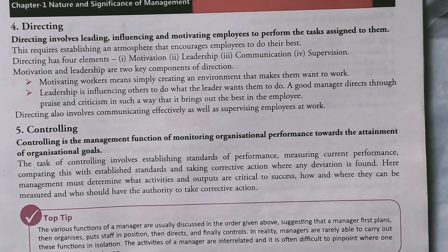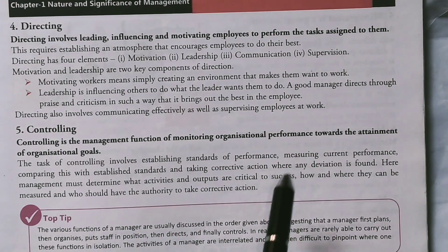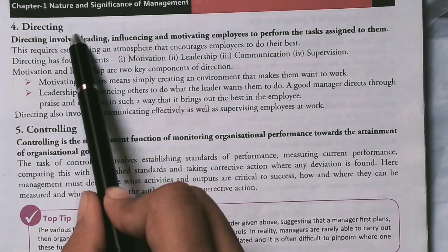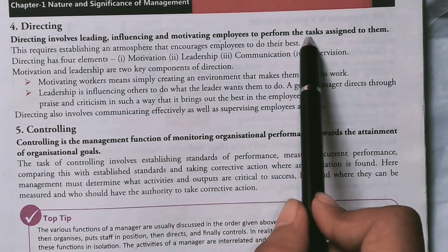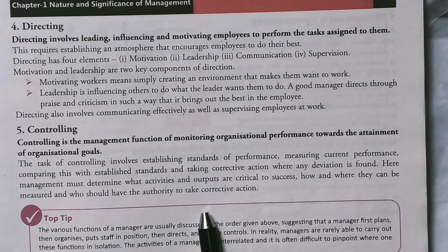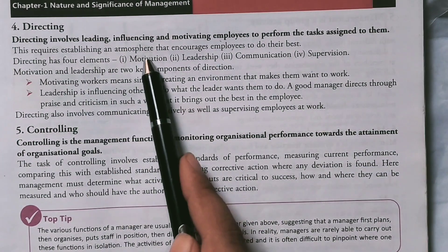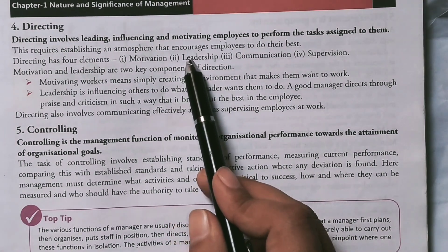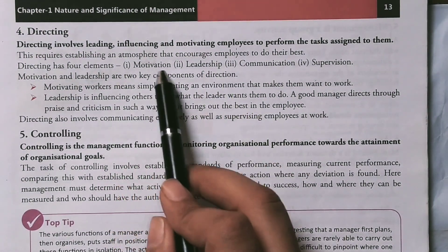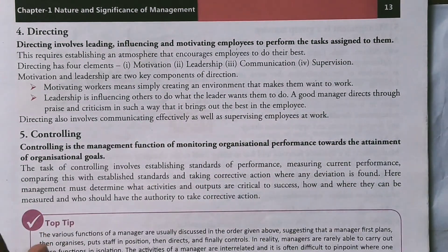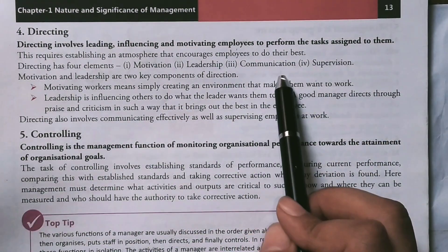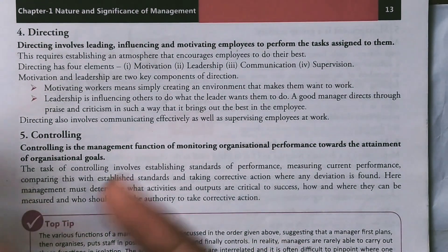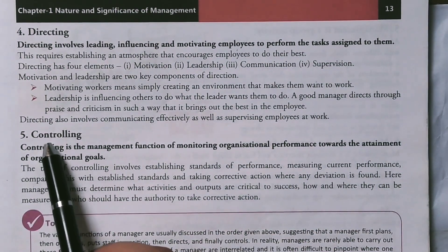The next function is directing. In directing, we guide, supervise, and control what the person is doing, ensuring they are doing it as per the goals and norms. We lead, influence, and motivate employees to perform the tasks assigned to them. This requires establishing an atmosphere that encourages employees to do their best. Directing has four elements: motivation, leadership, communication, and supervision. Motivation and leadership are two key components of directing, through which we can make a person do excellent work.